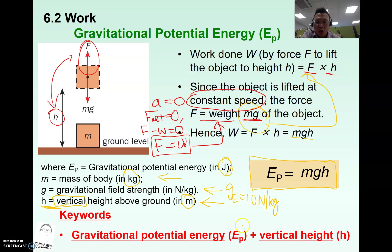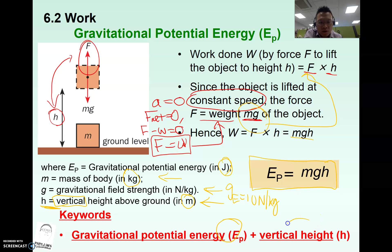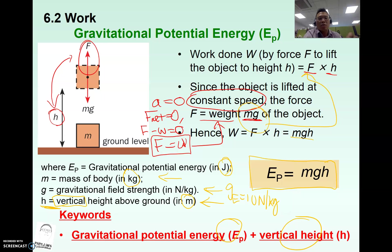For gravitational potential energy, one of the key words that students must write to illustrate their understanding is 'vertical height.' The student needs to mention vertical height and qualify it in their explanation. That is how markers understand that the student knows how to apply gravitational potential energy.